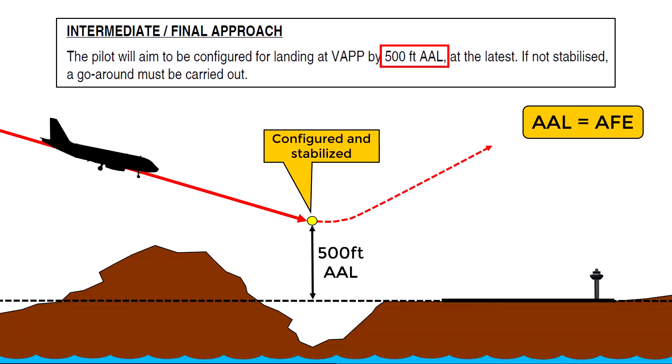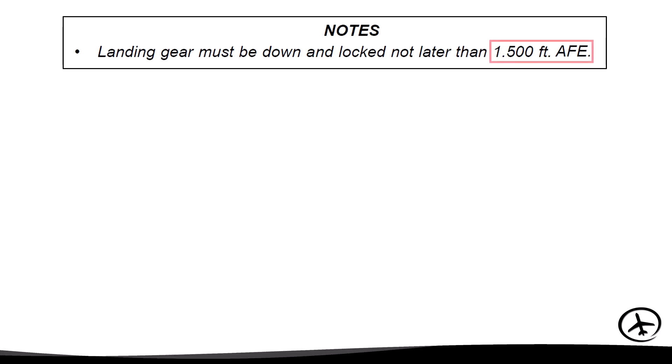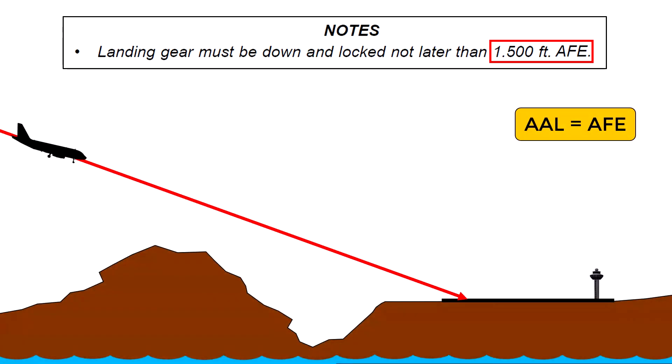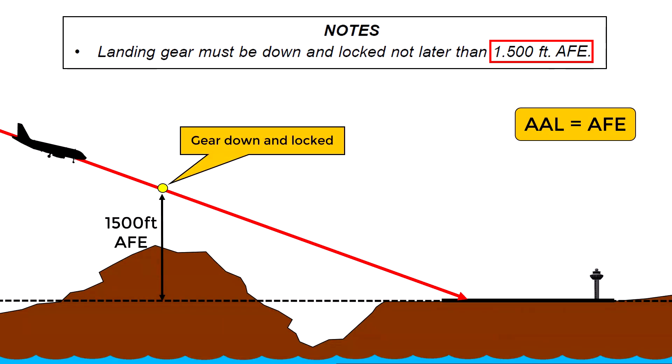Therefore in this case the airport elevation is being used as reference regardless of the conditions of the terrain. In this other statement it is specified that the landing gear must be down and locked at 1500 feet AFE, regardless of the terrain conditions as we can see in this example.